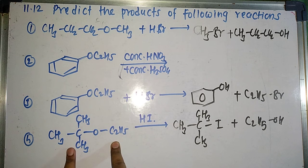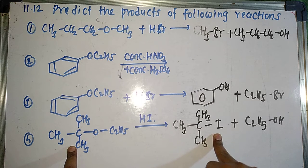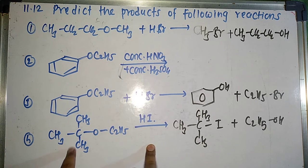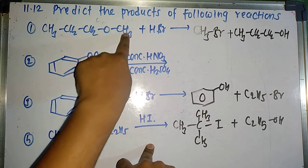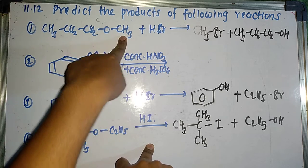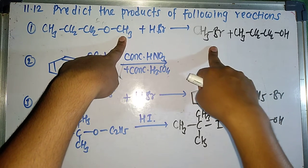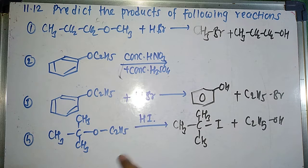Whenever we are having tertiary alkyl group in an ether, that tertiary alkyl group will always form a halide, that is alkyl iodide in this case. Whenever we are having one small alkyl group, one large alkyl group, then that small alkyl group will form bromide or iodide and large alkyl group will form alcohol.